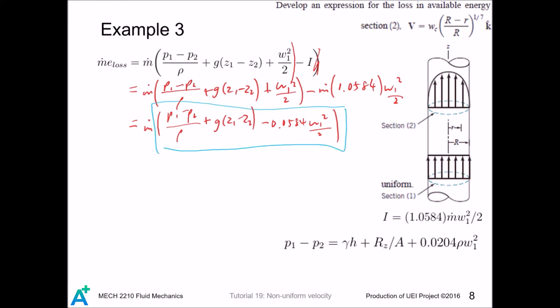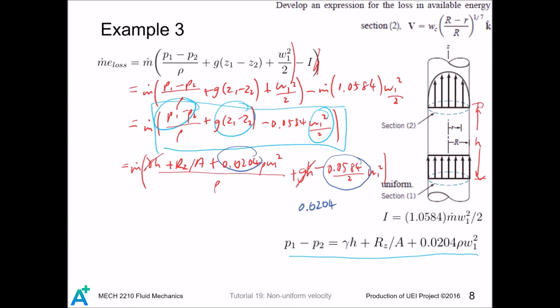Actually, this is already a useful expression for the loss in available energy, since we can measure the pressure difference, difference in elevation, and the velocity. But then in the previous example, we also obtained the expression for pressure drop, so we can continue to substitute in. Again, h is this distance, so this term cancels out, and we can calculate the coefficient for w1 squared. So, and this is our expression.